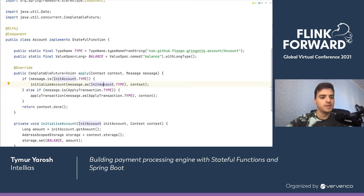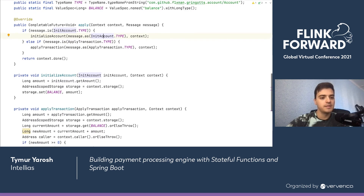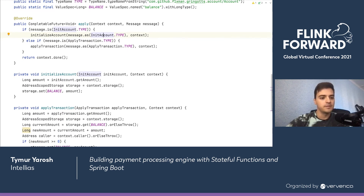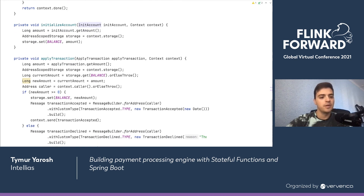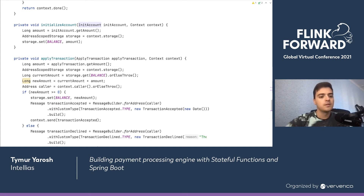Let's check the account function. It has a static type name used for sending messages to this function, and a value spec for balance used to request current state from the context. The function implements the apply method from the StatefulFunction interface, which dispatches incoming messages to handler methods. For instance, if we receive a message of type InitAccount, we deserialize it to the proper object and pass it to the initializeAccount method, which persists the requested amount as the current balance.